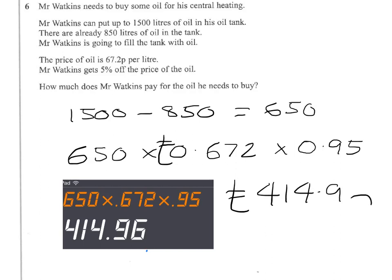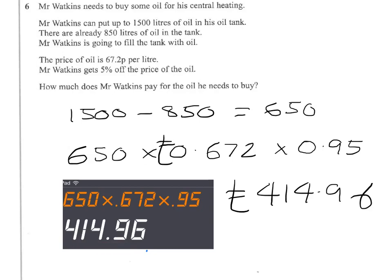I'll just explain once more. It's 650 that's come from taking out the oil that's already there, so we've got to buy 650. The price in pence was 67.2 pence, so that's 0.672 pounds. And we're getting 5% off the price of oil. So, to take 5% away, you have 95% left. And 0.95 is the decimal equivalent of 95%. Push that through the calculator and you get the answer: £414 pounds 96.